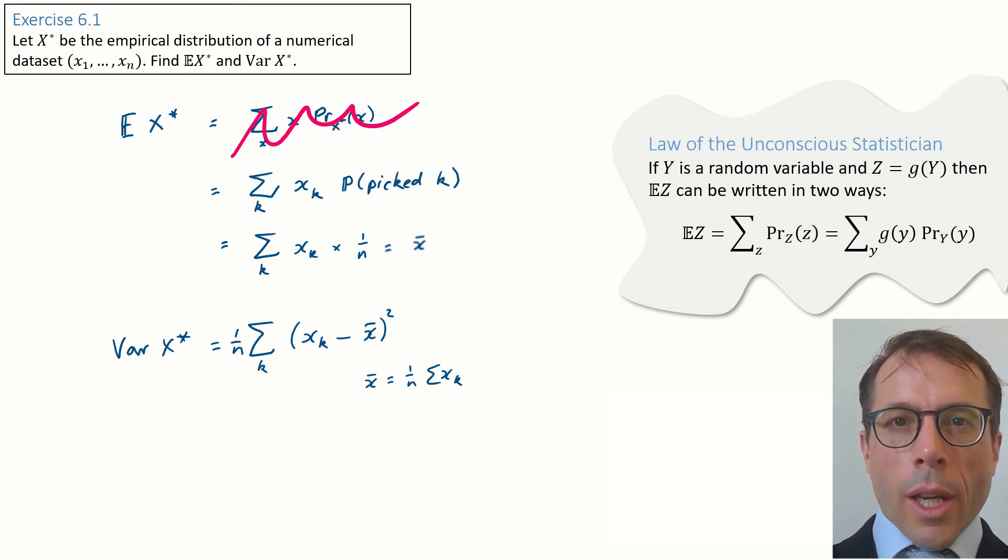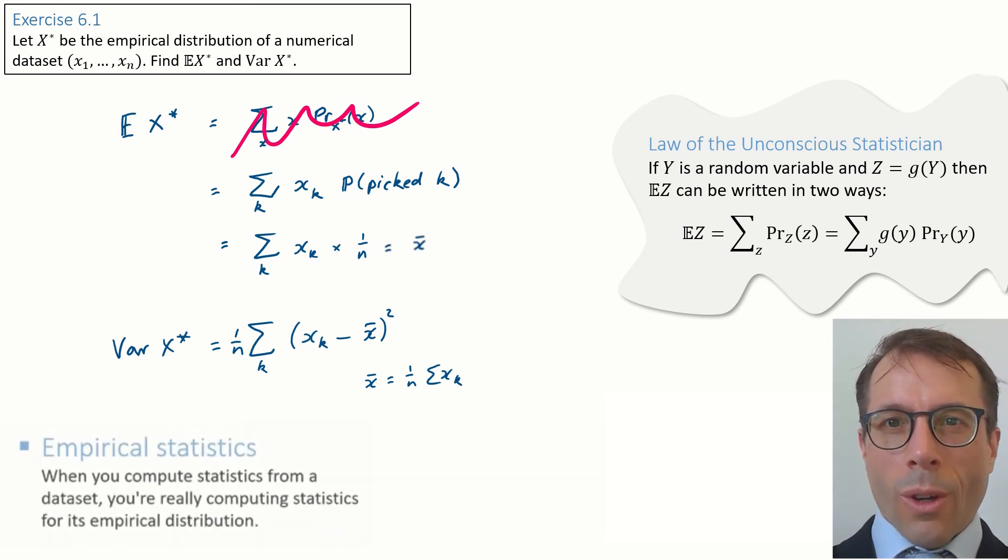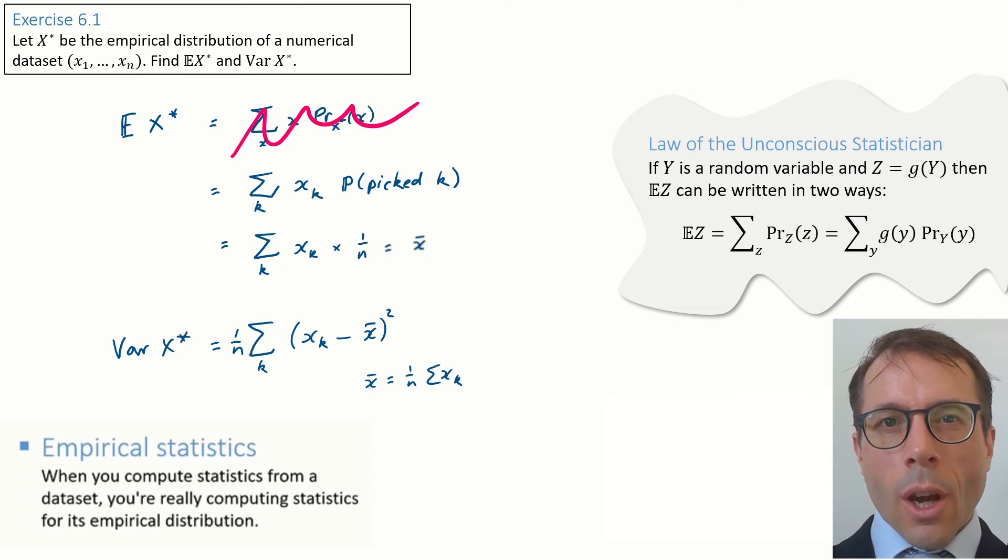Let me rephrase this. If you're given a data set and someone asks you to compute its variance, you should technically speaking say, hey, that's a stupid thing to ask. The word variance is only defined for random variables and there's no such thing as the variance of a list. Or if you're being helpful, you can say, oh, you mean the variance of the empirical distribution of the data set, and then everyone's happy.